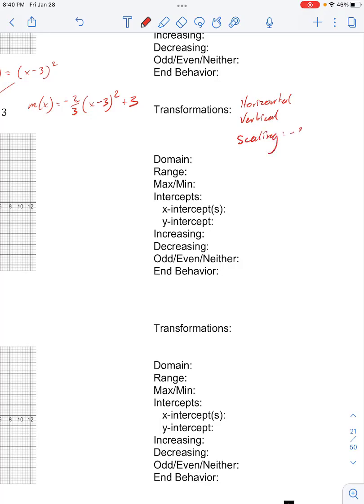So our scaling factor is negative 2 thirds. Our vertical shift is our k value, so that's plus 3. So we move up 3 units, and we have a horizontal shift, also of 3 units to the right, so that's plus 3.